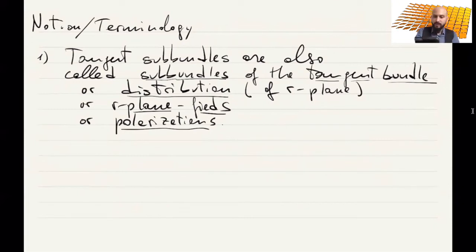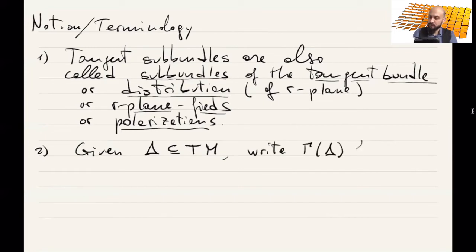Now some notations whenever we have a tangent sub-bundle. Actually, you can even define for any subset of the tangent bundle. So what we do, we write gamma delta for the sections of delta, which means, of course, remember, when you have delta, you restrict the projection from the tangent bundle, you have a structure of bundle. So this is a bundle. And now we're going to look for smooth sections of this bundle.